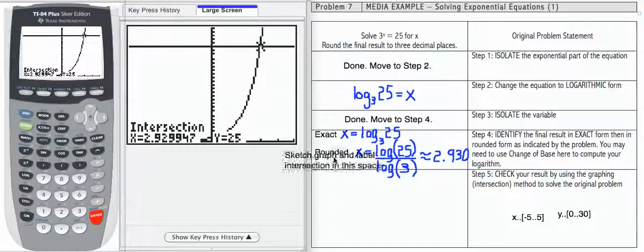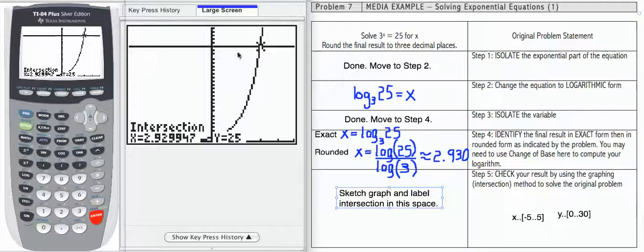So if you're showing this on your work, you need to sketch this graph and label, plot and label the intersection in the space that you have here. So we have solved the equation, 3 to the x equals 25, 2.930 is the result. You can also check by just plugging in the 2.930 back into the original equation.